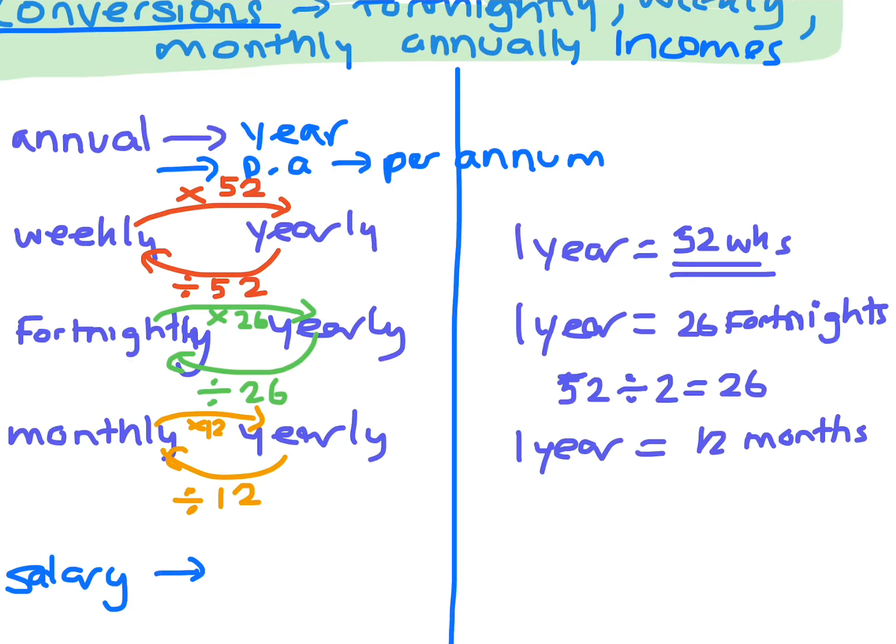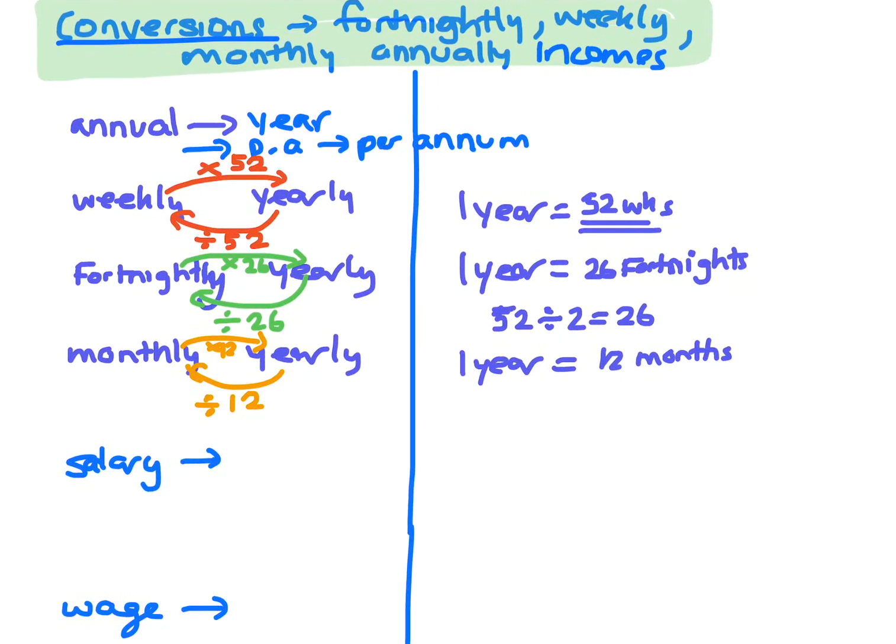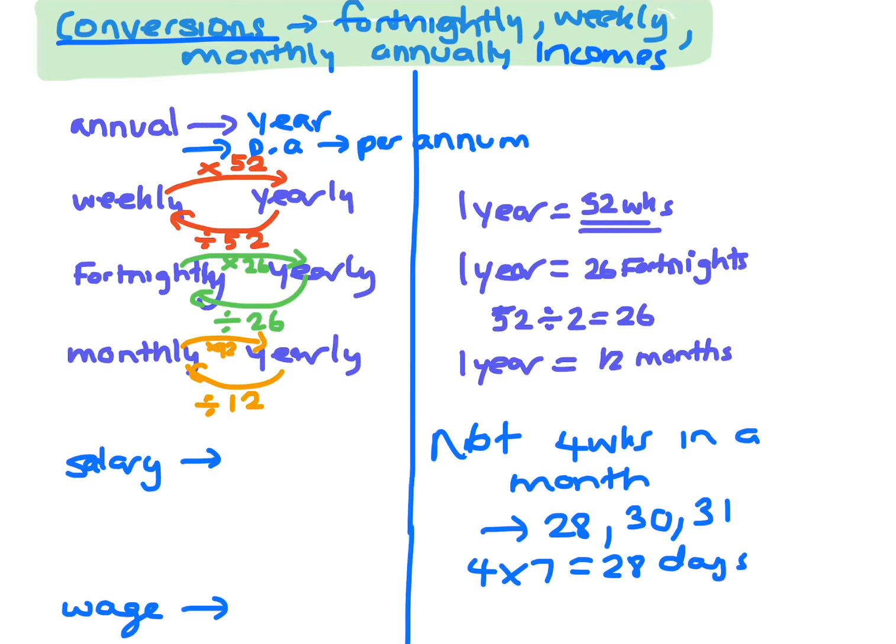Now, just to be aware of this, there are not four weeks in a month. Because every month has different days. There's one with 28, some with 30, some with 31. Okay, so four weeks is four times seven, which is 28 days. So there are not exactly four weeks in a month.